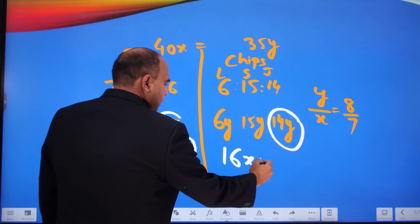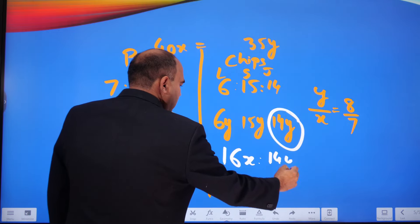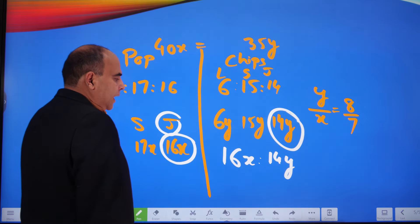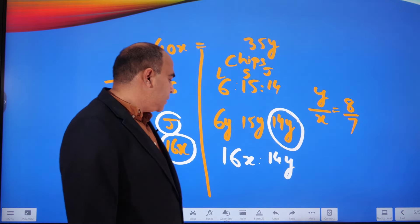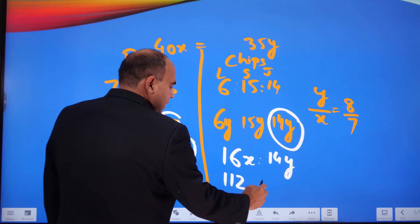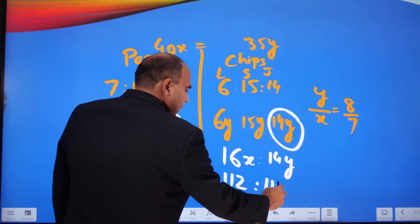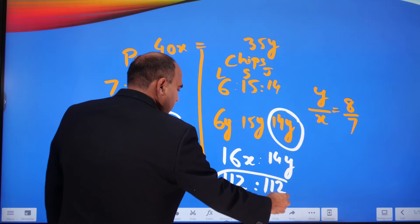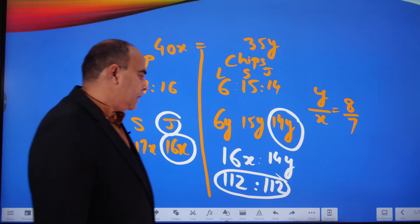They're looking for the ratio of 16x to 14y. And since x is 7 and y is 8, I'll get 112 here and with y is 8, this also becomes 112. And the ratio becomes 1:1.